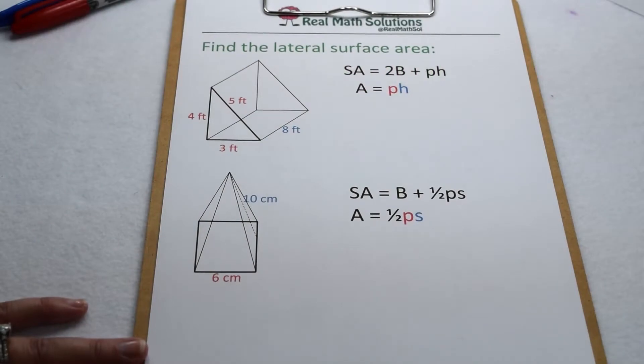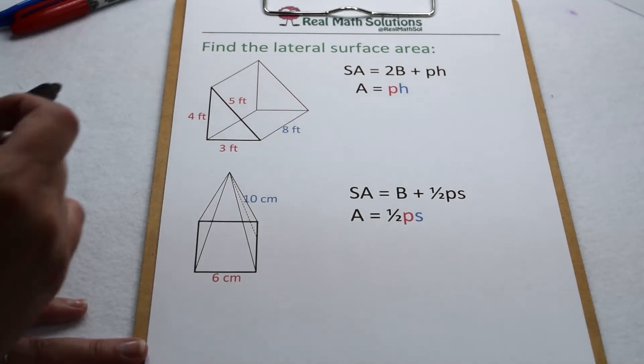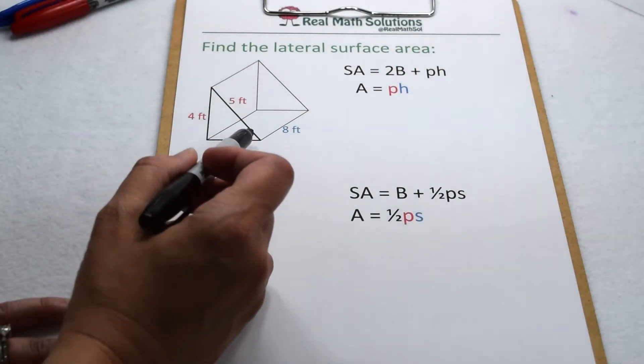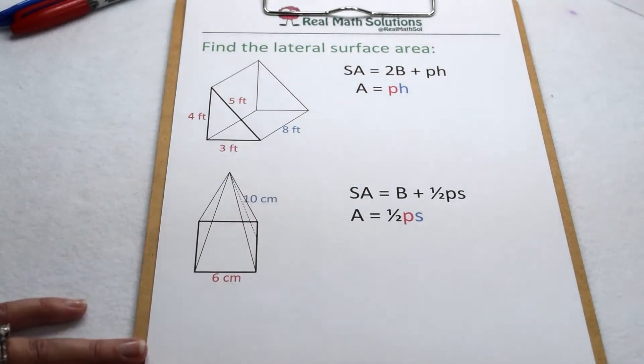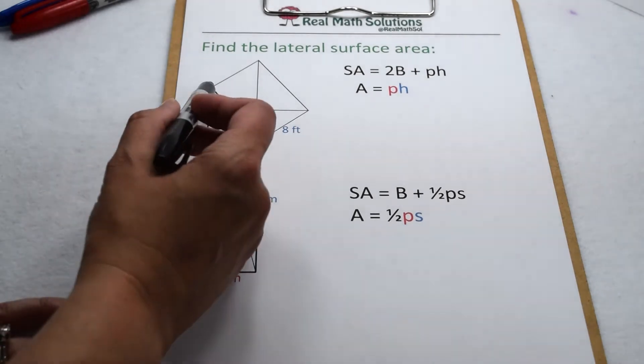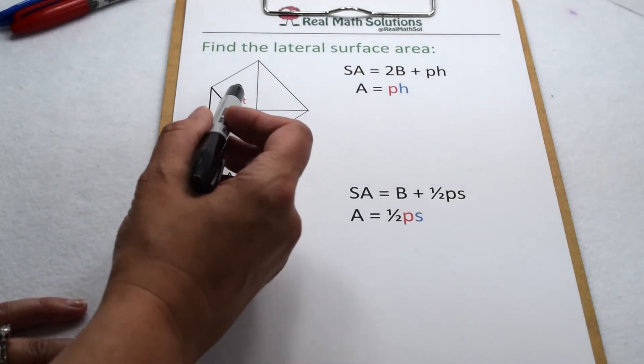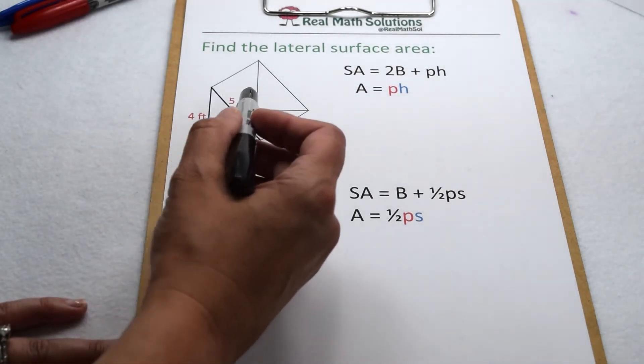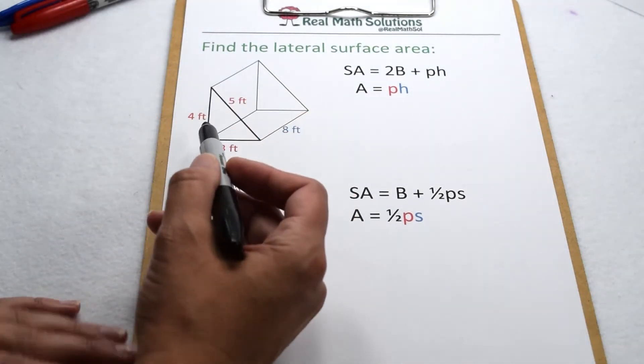Instead of being asked to find the total surface area, sometimes we're asked to only find the lateral surface area of a figure. That means we need to find the area of just the lateral faces, excluding the bases.